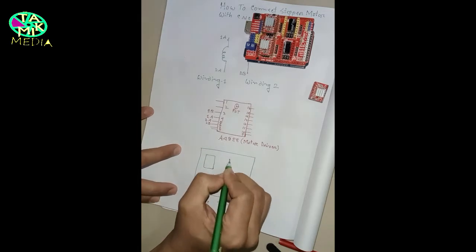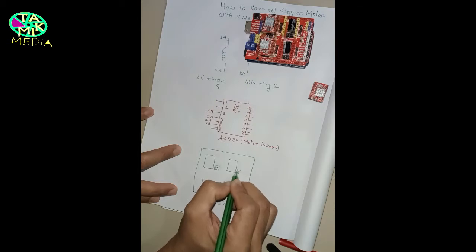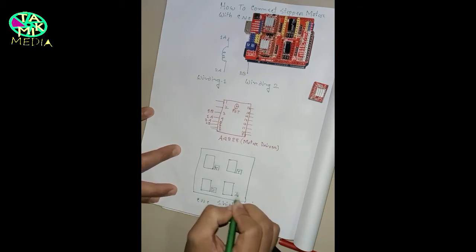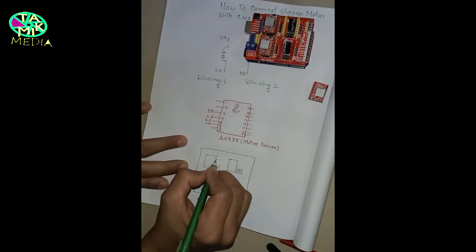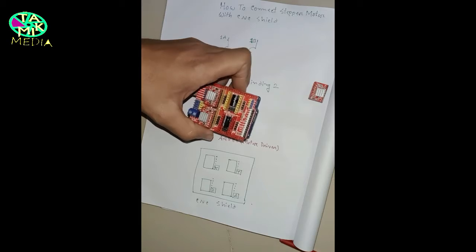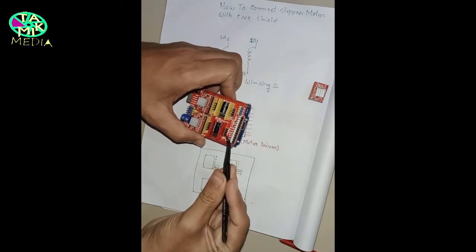This is my CNC shield. This is X, Y, Z, and this is A. Just four pins I need here.